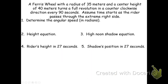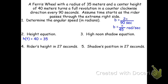Another example: a ferris wheel with a radius of 35 meters, center height of 40 meters, making a full revolution every 90 seconds. In radians, b = 2π/90 = π/45 radians per second. The height equation is h(t) = 40 + 35·sin(π/45 · t), and the shadow equation is s(t) = 35·cos(π/45 · t).